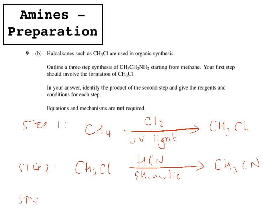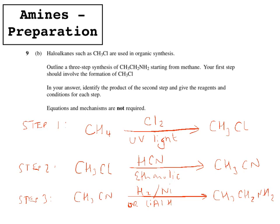Step 3 is to go from CH3CN all the way to the final product, CH3CH2NH2. As discussed, you can use hydrogen with a nickel catalyst, or you could use LiAlH4. Both of those will reduce your nitrile group down to an amine group.